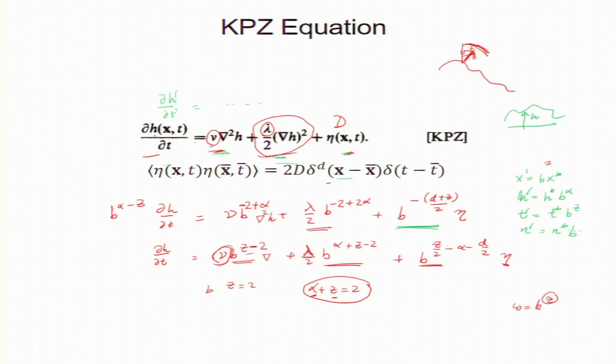So, h is. So, h will be b to the power alpha. So, h equal to. So, this is correct h prime. So, I am going to replace h prime by h to the power alpha. h prime equal to h times b to the power alpha. So, h prime. So, this h prime is replaced by h b to the power alpha and t will be.